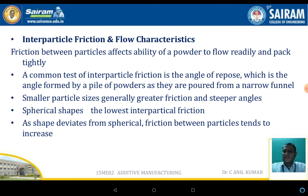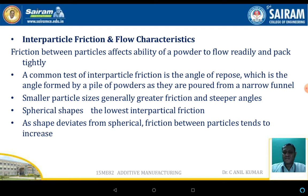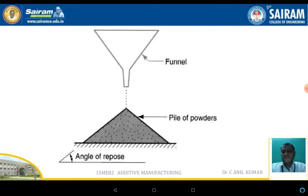Inter-particle friction and flow characteristics: the friction between particles affects the ability of the powder to flow readily and pack tightly. The common test for inter-particle friction is the angle of repose, which is the angle formed by piling up powder as it is poured from a narrow funnel. Smaller particle size generally means greater friction and a steeper angle. Spherical shapes have the lowest inter-particle friction; as the shape deviates from spherical, friction tends to increase. This schematic diagram shows the funnel and pile of powder.